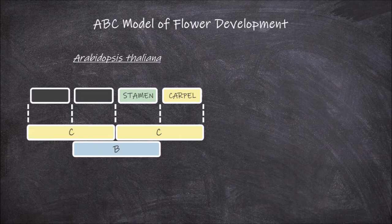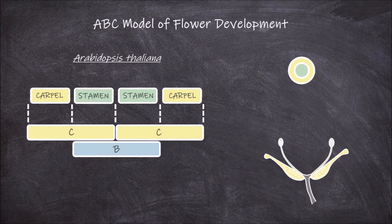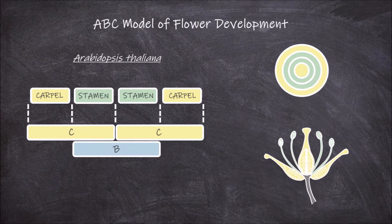Instead, C genes are expressed in place of the A genes. This means that in place of the sepals, carpals instead develop as the first whorl. It also means that in place of petals, stamens develop as the second whorl. The third whorl stays unchanged and still develops as stamens, as does the fourth whorl that still develops as the carpals.